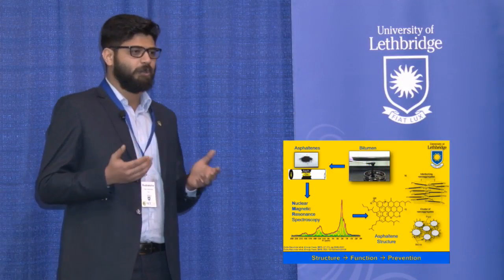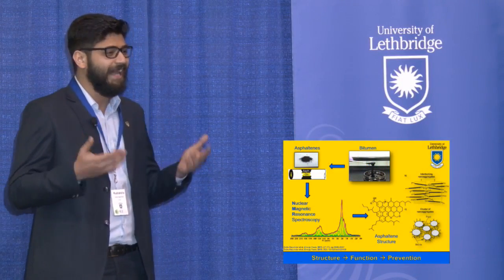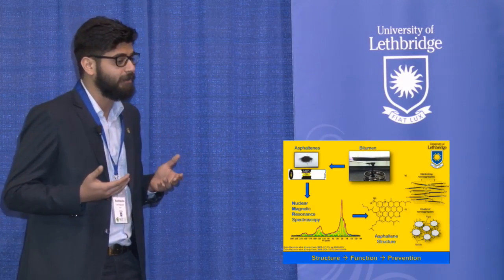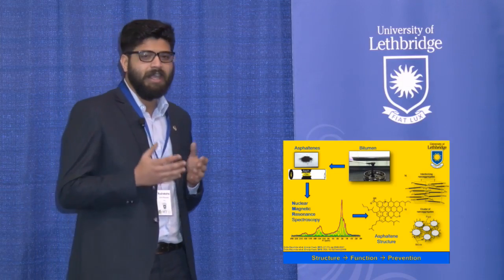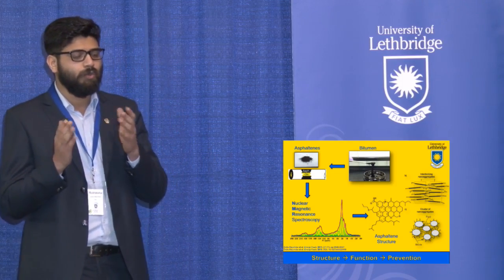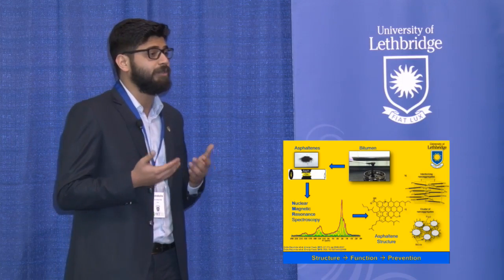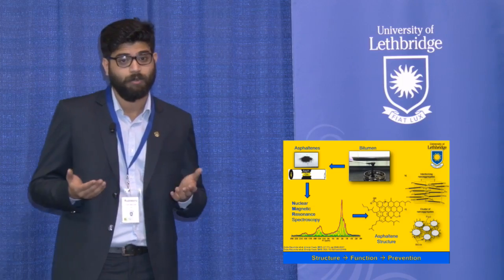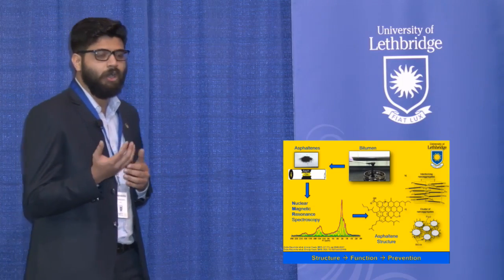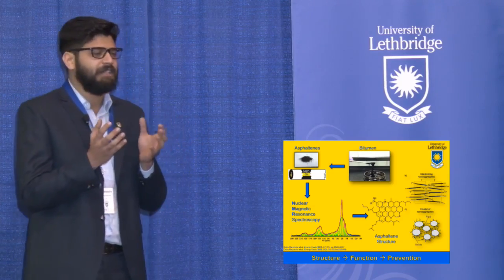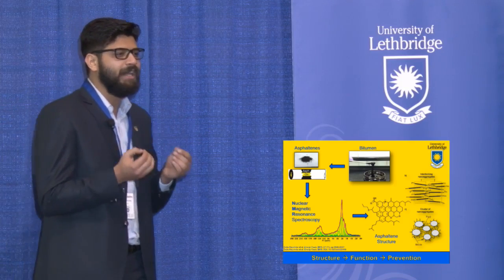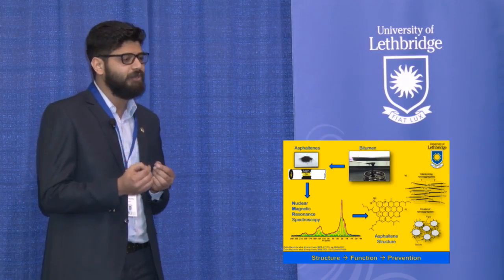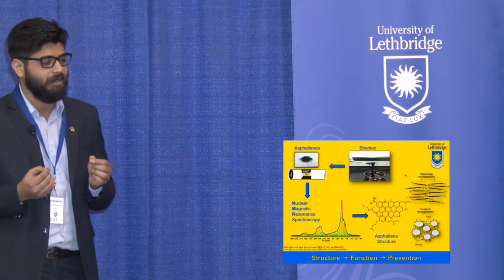The global decline in the production of conventional or light crude oil, and a projected decline in U.S. shale oil production in the next 20 to 50 years, has shifted the industry's focus towards heavier sources of petroleum — such as the Canadian oil sands, the third largest crude oil reserve in the world. However, the oil found in oil sands comes as a thick, viscous, molasses-like sludge called bitumen, making extraction extremely energy intensive and not very economically viable.